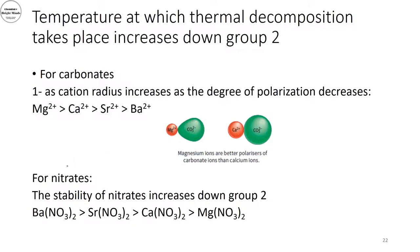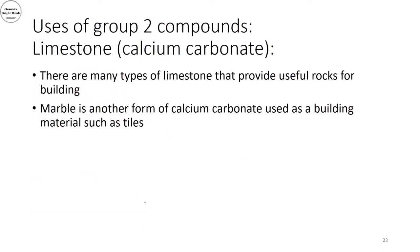For nitrates, thermal stability also increases going down the group — barium nitrate is more stable than strontium nitrate, which is more stable than calcium and magnesium nitrates. The more stable the compound, the higher the decomposition temperature required.